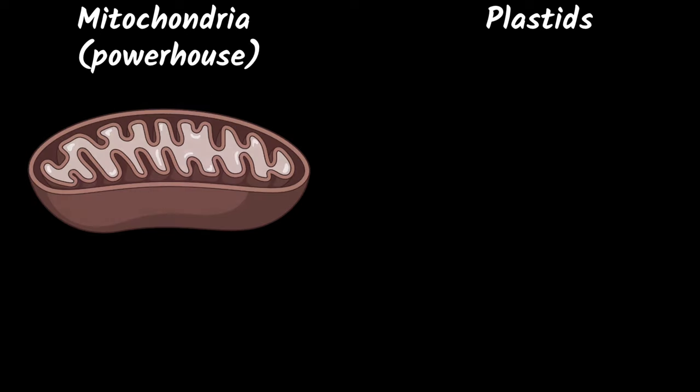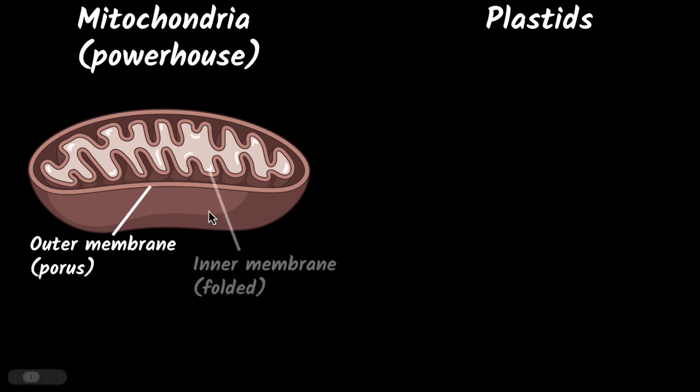They are called the powerhouse of our cells and they look somewhat like this. You can see that there are two membranes. We have the outer membrane, which is usually porous, and then there is this inner membrane which is highly folded.